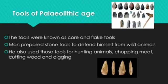The Paleolithic man prepared stone tools to defend himself from wild animals. He also used them for hunting animals, chopping meat, cutting wood, and digging. The tools were known as core and flake tools. The core tools were made from large stones by sharpening the edges.